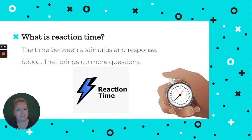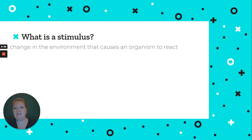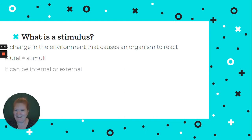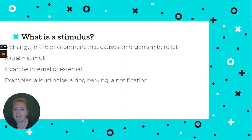That brings up a couple more vocabulary words. What's a stimulus? A stimulus is a change in the environment that causes an organism to react. In this case, we're really talking about us, the person. The plural is stimuli — not stimuluses, stimuli. The stimulus can be internal or external, although primarily here we're focusing on external. Examples: a loud noise, a dog barking, a notification on your phone, touching a hot stove.